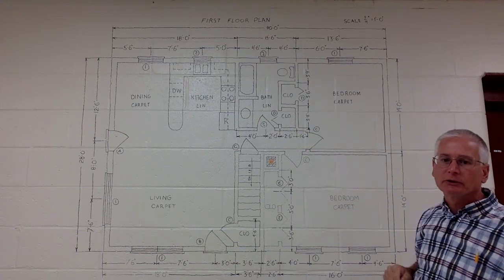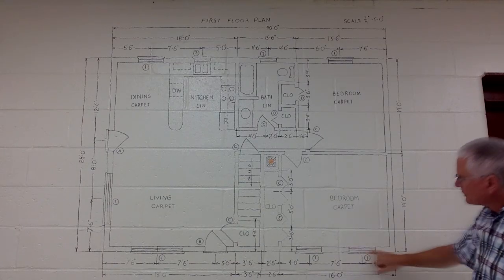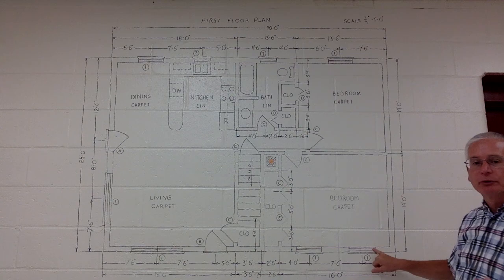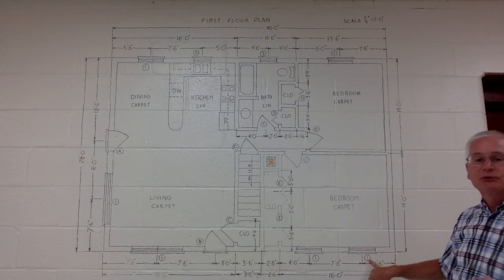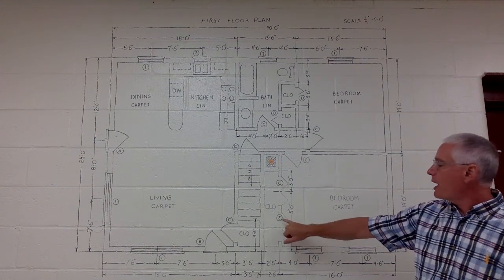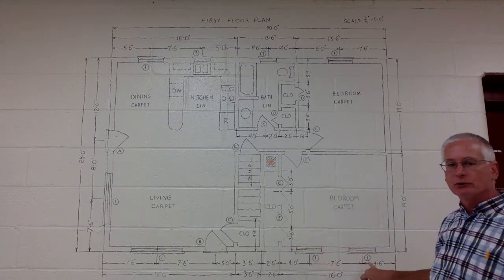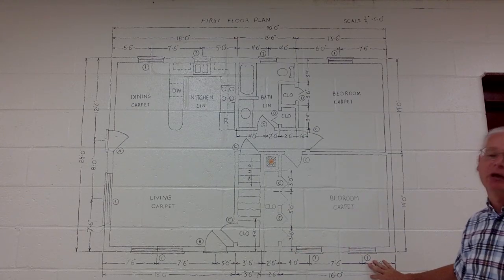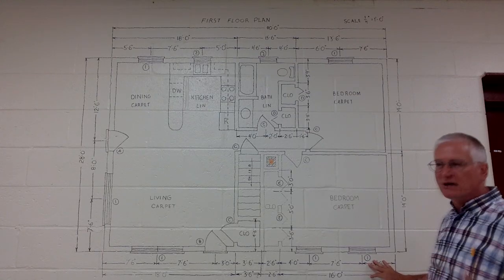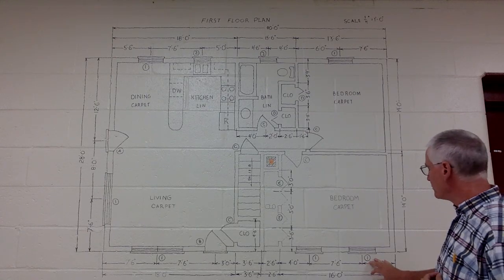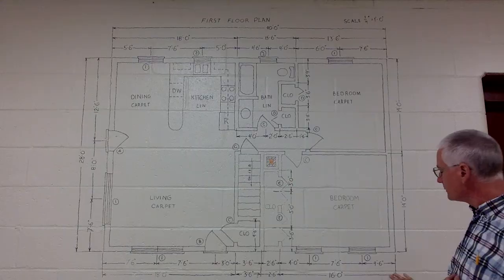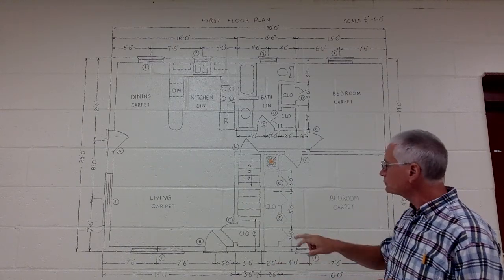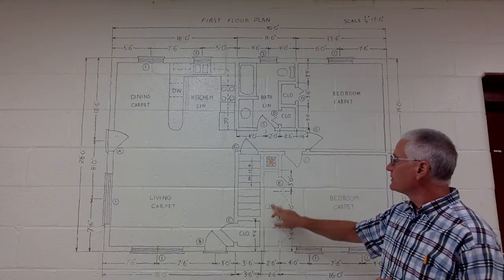The window symbol marks off the length of the window with a couple of lines going through the middle of it. There will be circles with numbers and perhaps letters next to doors and windows — those reference back to a door and window schedule that has sizes, materials, and details about those particular items. Dimensions across the front of the house as well. CLO stands for closet, so this would be a large closet in this bedroom.